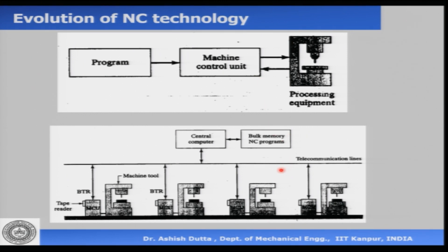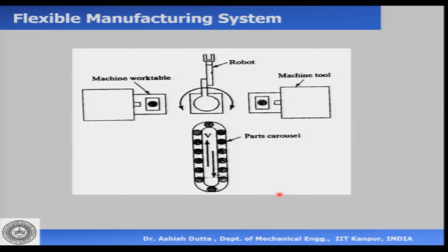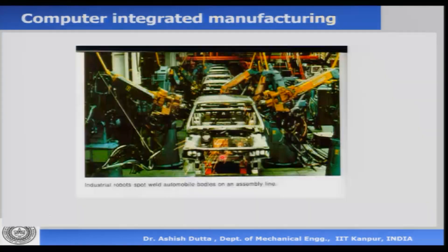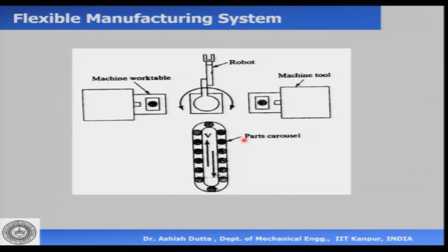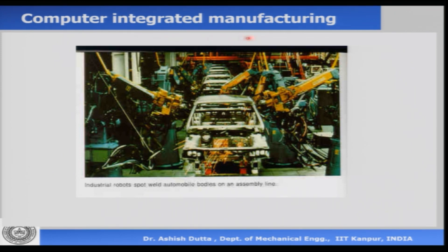As the computer got more and more powerful about the 1970s, it could now control not only one machine but different types of machines — a machine tool, a work table, a machining device, a robot, and a parts carousel — integrating all of this, doing path planning, motion planning, and scheduling. The computer became more powerful and could control more machines. So we have NC, then CNC, then flexible manufacturing, and as the computer got even more powerful, computer integrated manufacturing, where the computer controls not only robots and mechanical devices but is also integrated with material handling and resource planning.